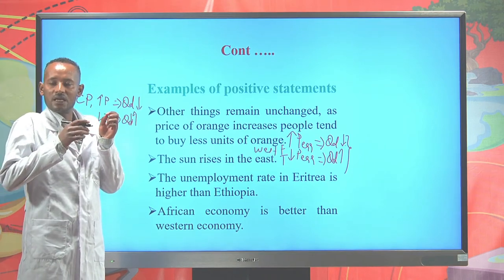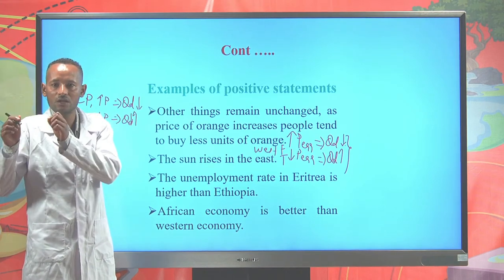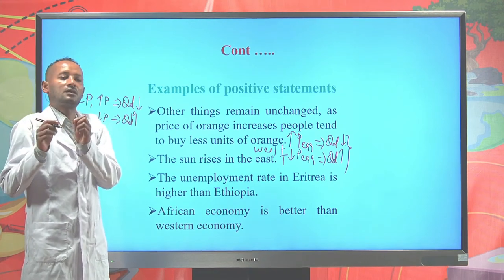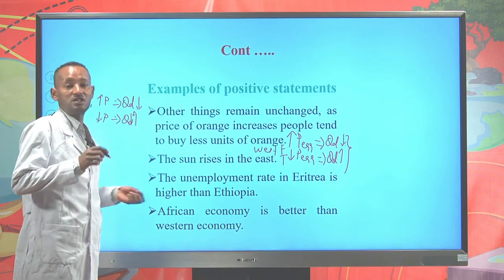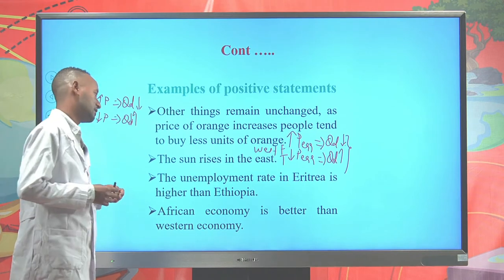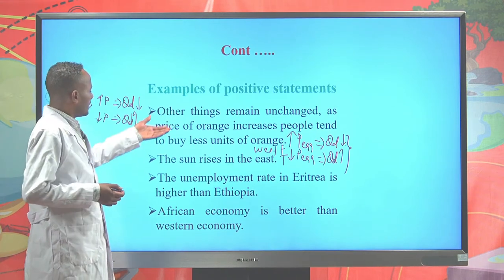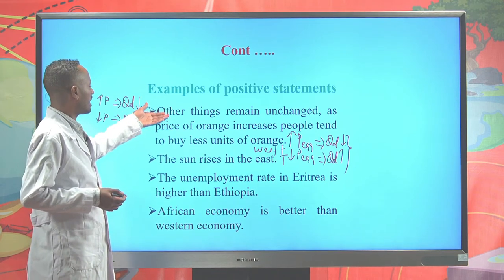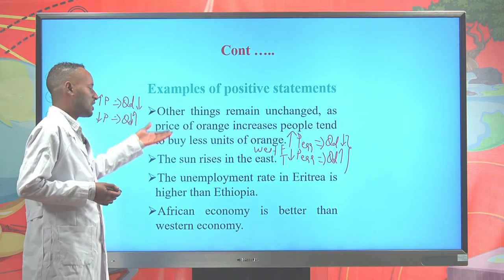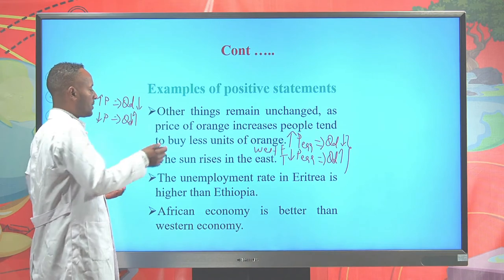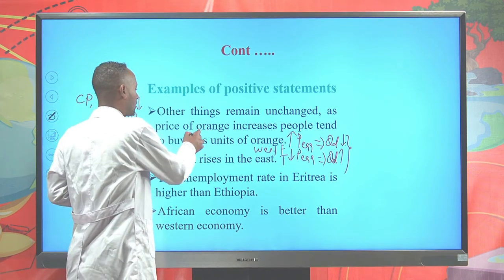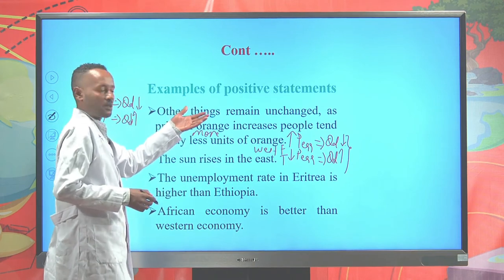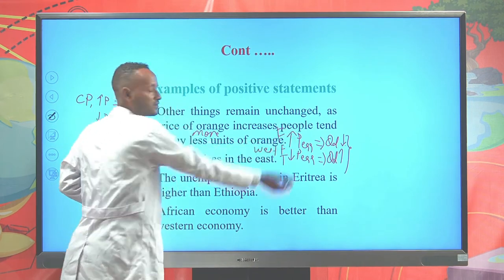If we can verify a statement — whether it is true or false — it is considered a positive statement. For example, if a statement says 'other things remain unchanged, as the price of orange increases, people tend to buy more units,' this is also a positive statement because it is false but verifiable.